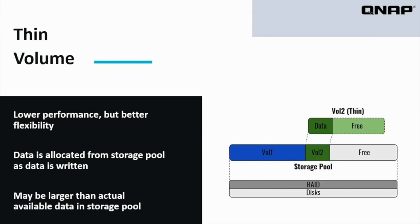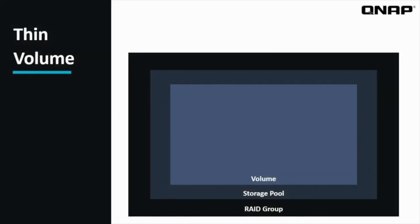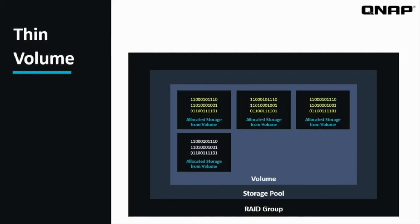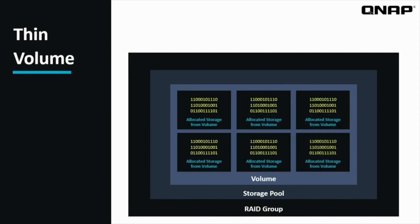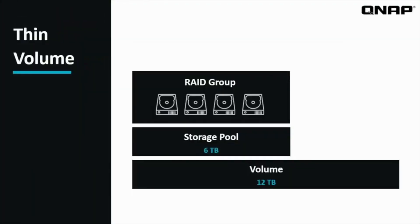Thin volumes have lower performance than thick volumes, but have more flexibility. On a thin volume, blocks of data are allocated to be written on as the writing occurs. The extra step of allocation simultaneously occurring is the reason that thin volumes are a little slower than the other options. However, because the storage isn't pre-allocated, it is still available in the storage pool after the volume has been created. One thing to be mindful of is that there may be less storage space available in the storage pool than you have set for the thin volume. When you make a thin volume, the size of that volume is not reserved, but rather just a limit of how much storage may theoretically be allowed in that volume.